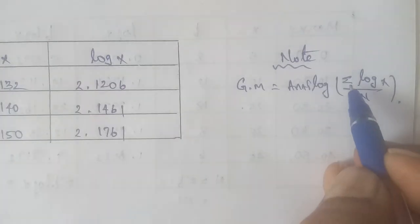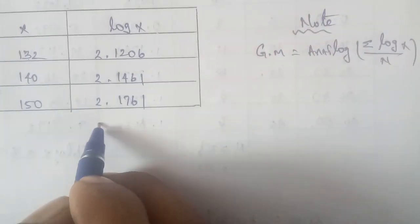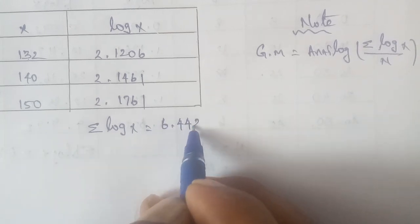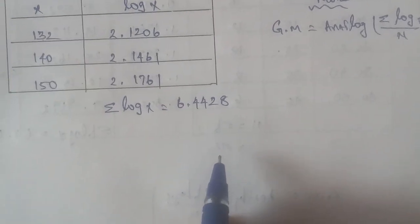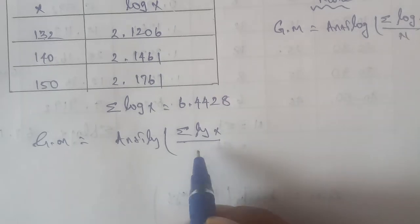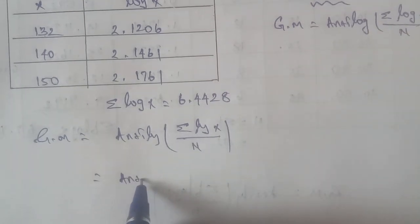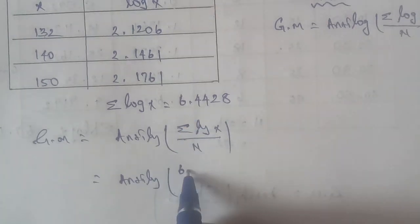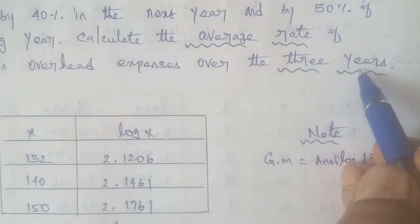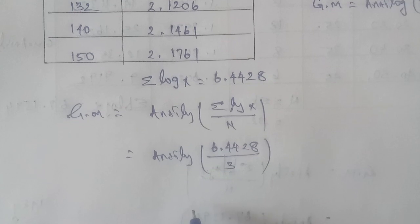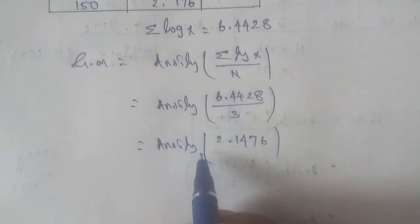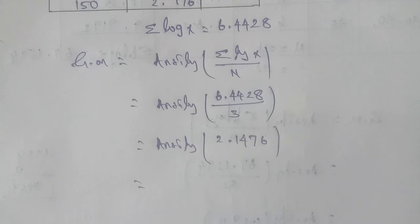The summation of log X values - we add them together. The sum is 6.4428. By the formula, the geometric mean equals antilog of summation log X divided by N. Antilog of 6.4428 divided by 3.